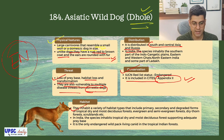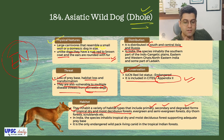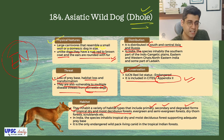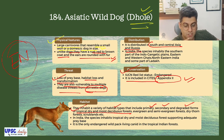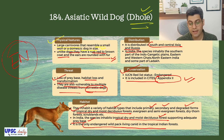Habitat: they inhabit a wide variety of habitat types including primary, secondary and degraded forms of tropical dry and moist deciduous forests, evergreen and semi-evergreen forests, dry thorn forests and scrubland. In India, the species inhabits tropical dry and moist deciduous forests supporting adequate prey base. It is the only endangered wild pack-living canid in the tropical Indian forests.